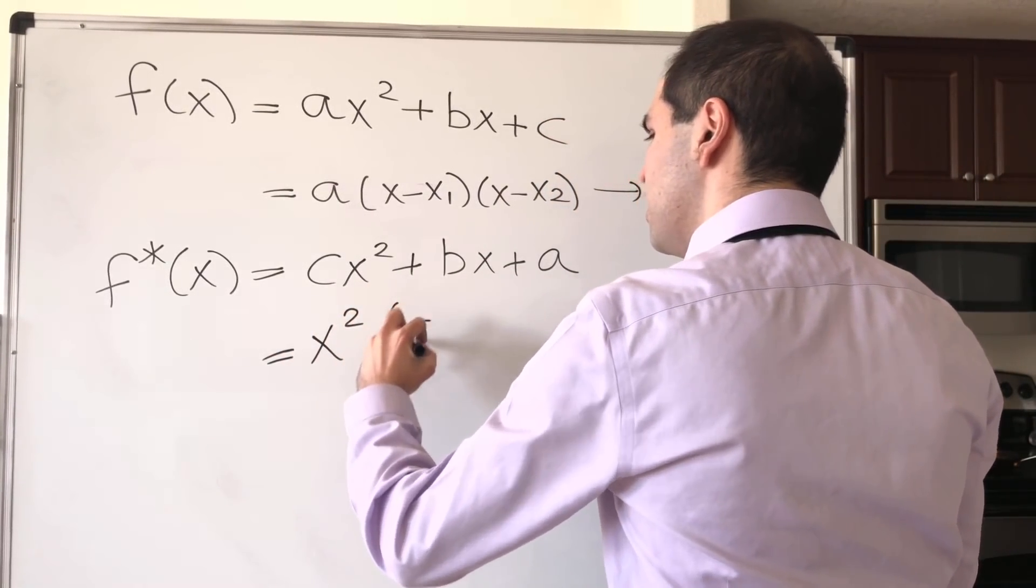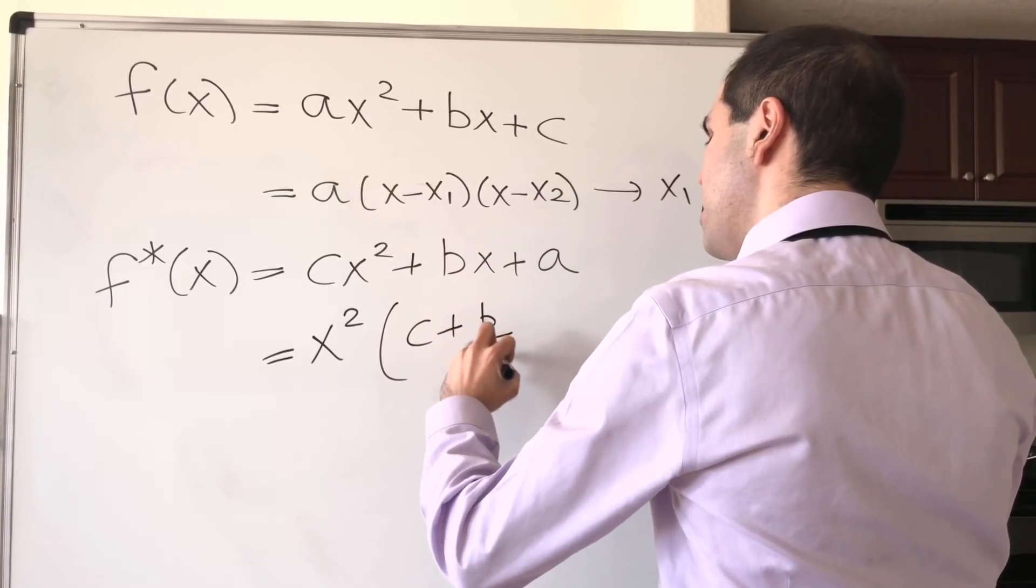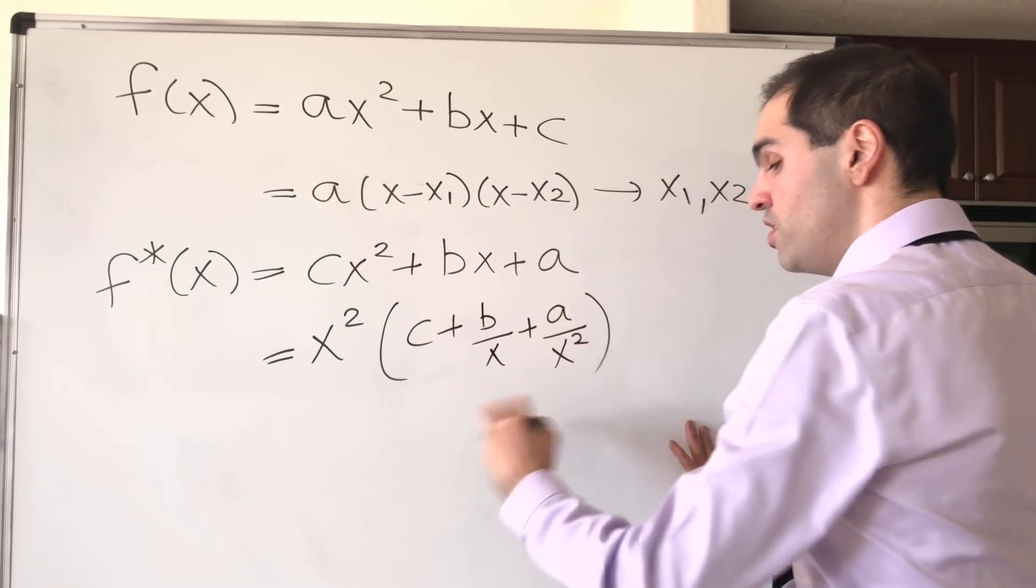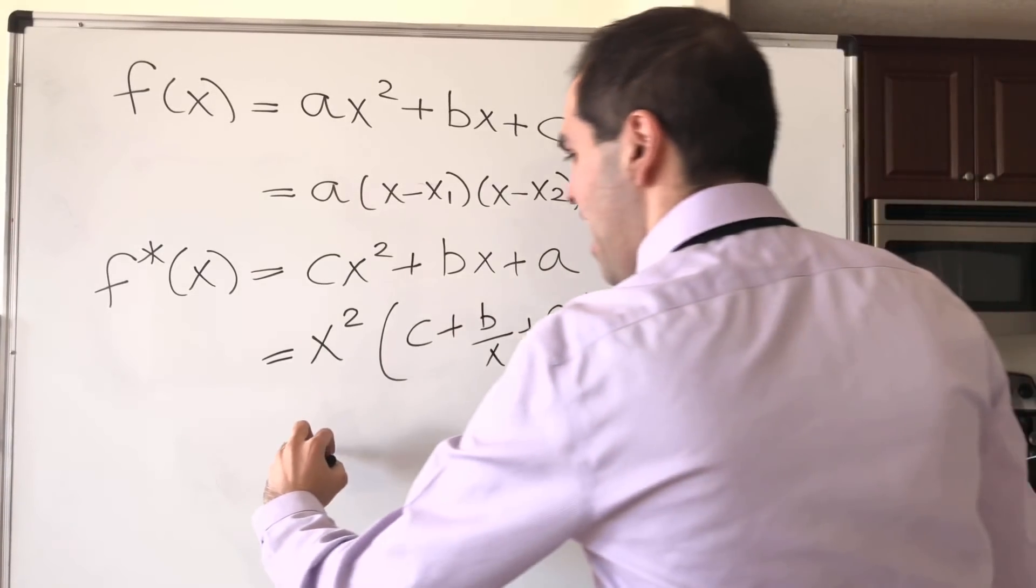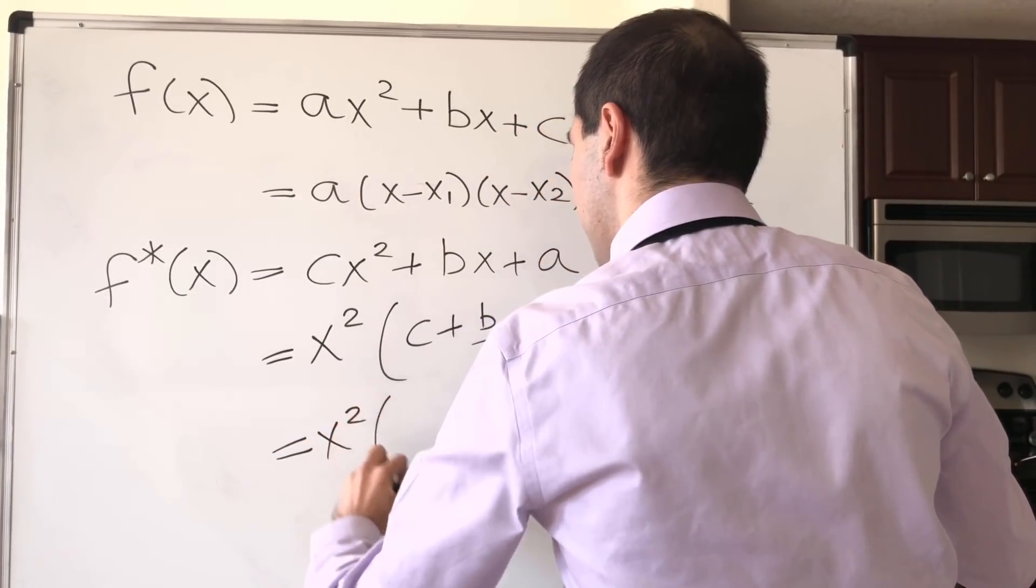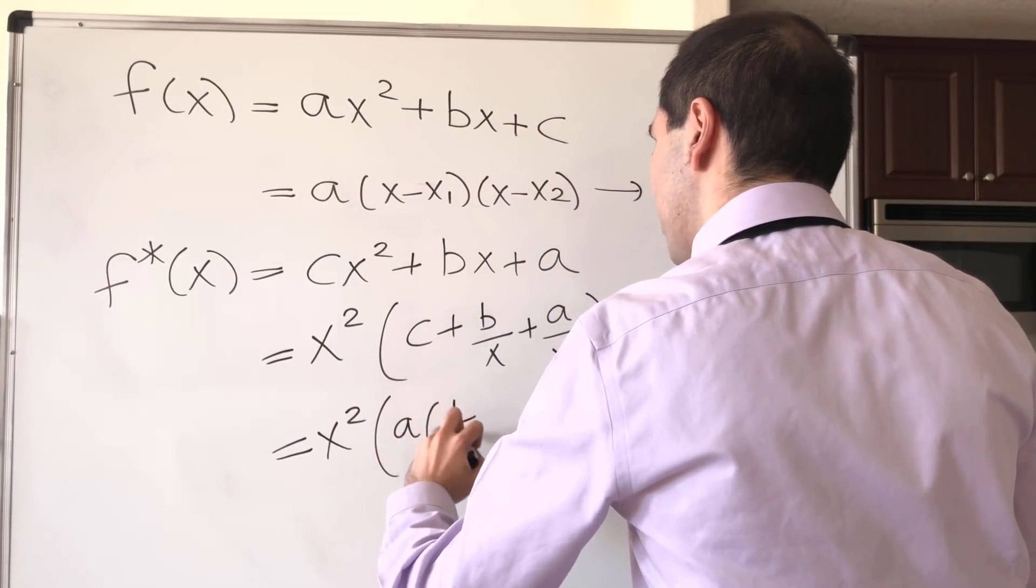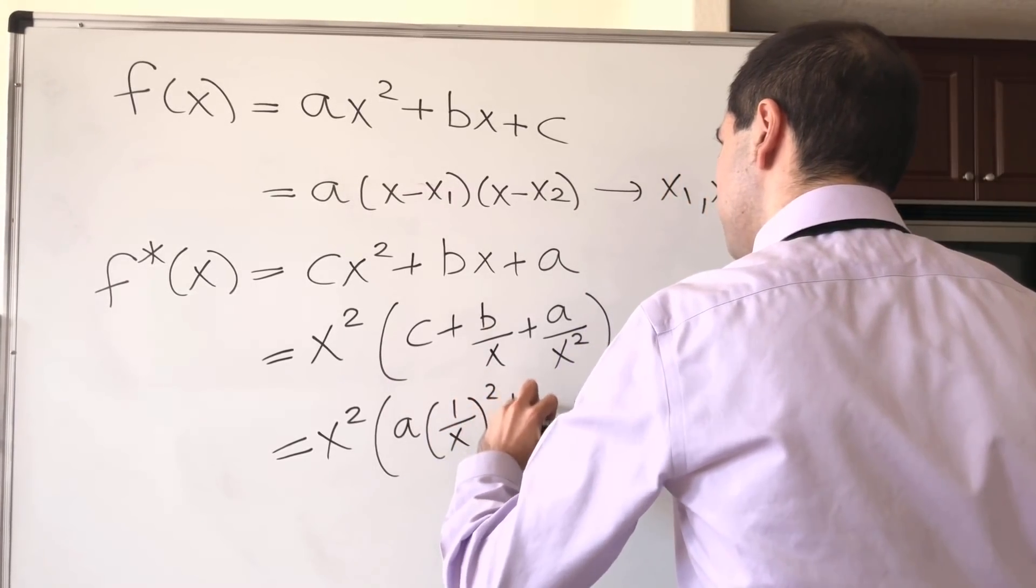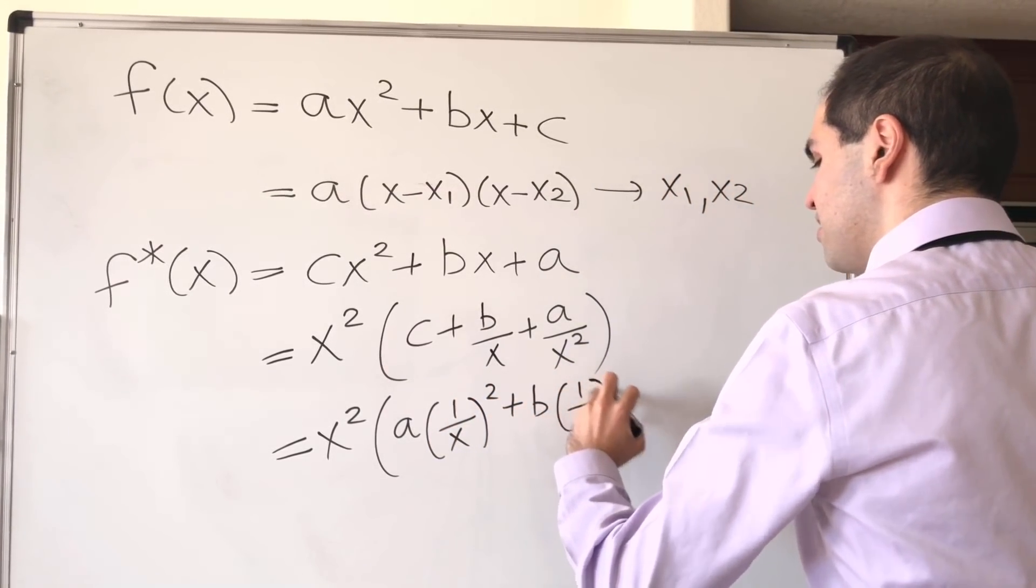Then the trick here is simply factor out x squared and see what happens. So x squared times c plus b over x plus a over x squared, which now you can simply write as x squared times a times 1 over x squared plus b times 1 over x plus c.